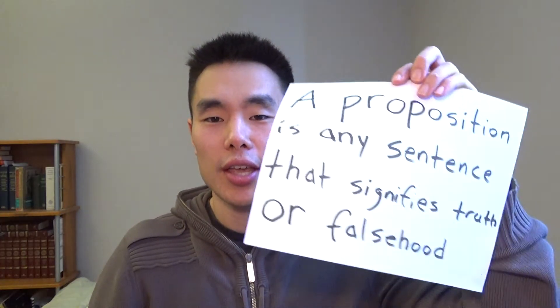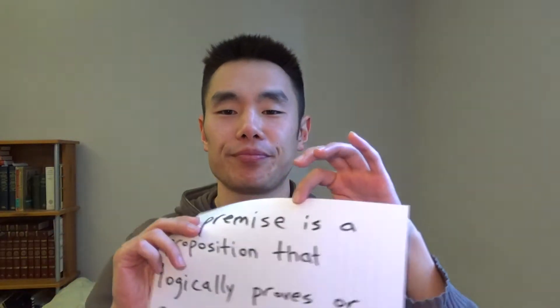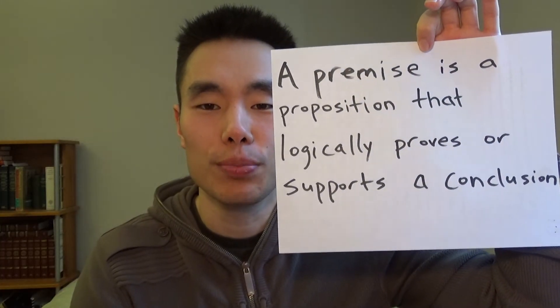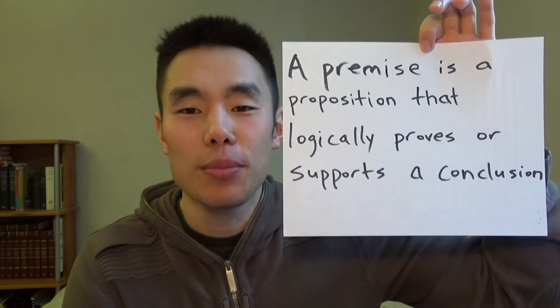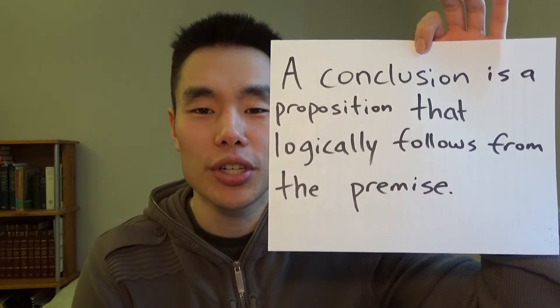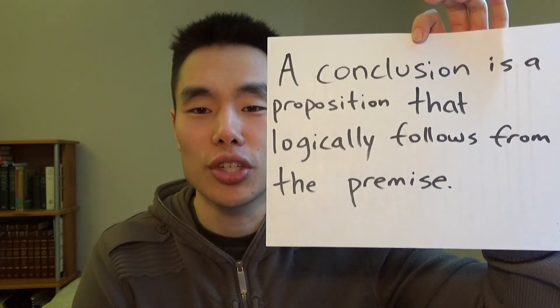So good — first thing is proposition. A proposition is any sentence that signifies either truth or falsehood. The next two words we need to learn are premise and conclusion. A premise is a proposition that logically proves or supports a conclusion. A conclusion is a proposition that logically follows from the premise. An argument consists of a premise and a conclusion.